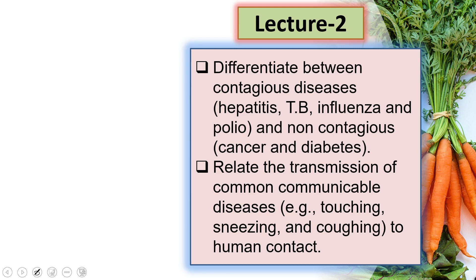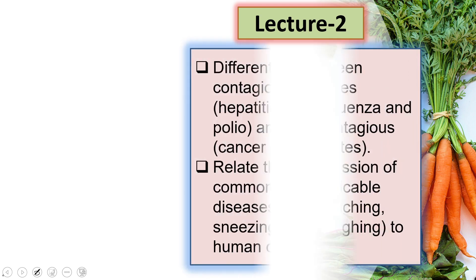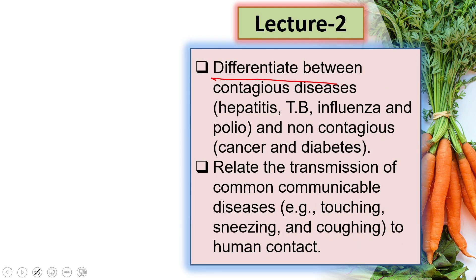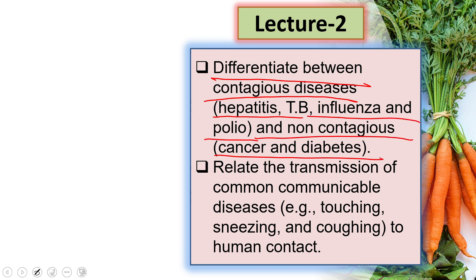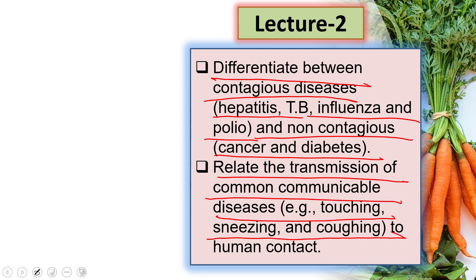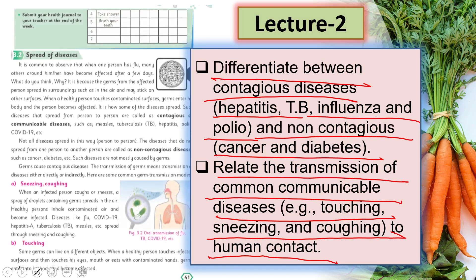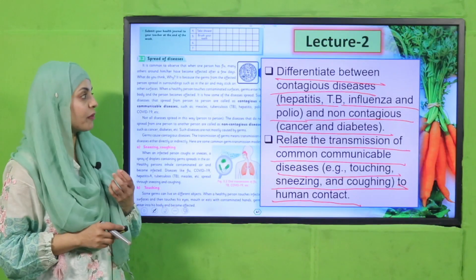In Lecture Number Two, students will be able to differentiate between contagious diseases — like hepatitis, TB, influenza, and polio — and non-contagious diseases like cancer and diabetes. They will also relate the transmission of common communicable diseases, such as through touching, sneezing, and coughing, to human contact.